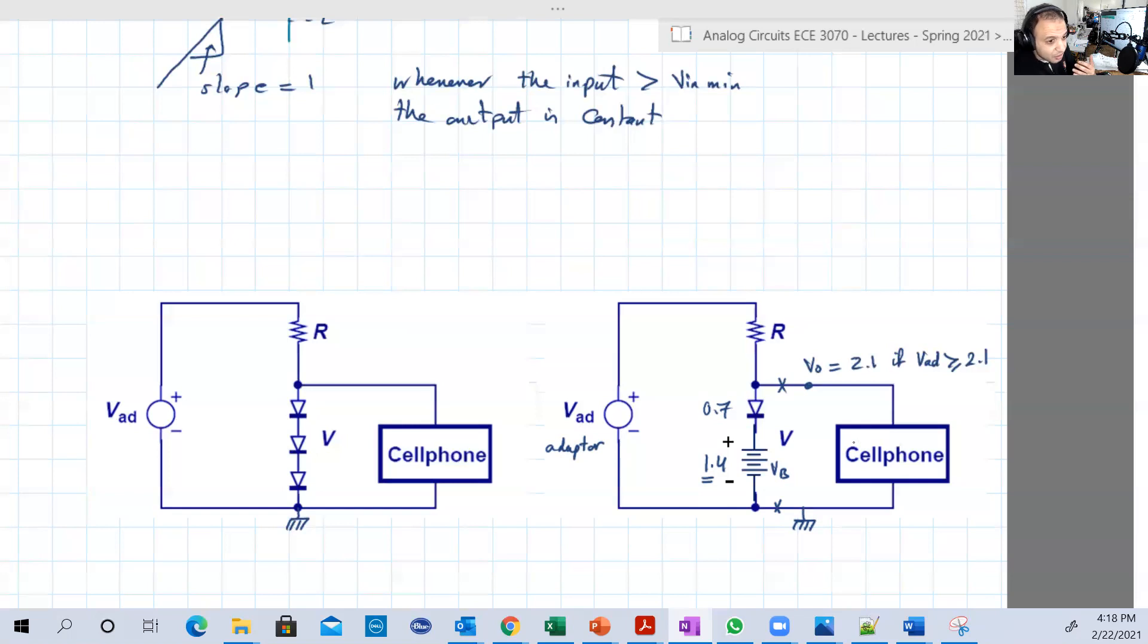And you can even have a smarter solution. Remember this V_B is 1.4 right? And remember V_D on for the diode is 0.7 volts. And what is 1.4? It's just 0.7 plus 0.7. So you can replace the battery by two diodes, silicon diodes, with 0.7 V_D.